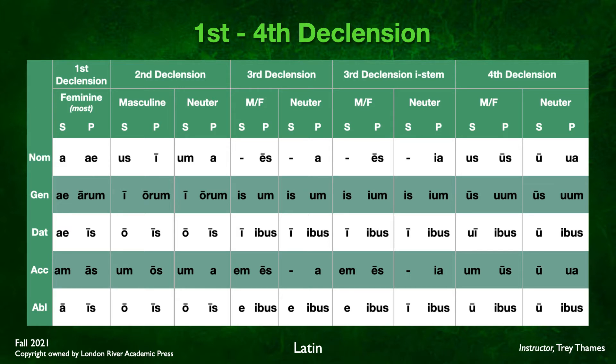You can see first declension — mostly feminine: -a, -ae, -ae, -am, -ā, -ae, -ārum, -is, -ās, -is. Second declension masculine: -us, -i, -o, -um, -o; plural -i, -orum, -is, -os, -is. And second declension neuter: -um, -i, -o, -um, -o; plural -a, -orum, -is, -a, -is.